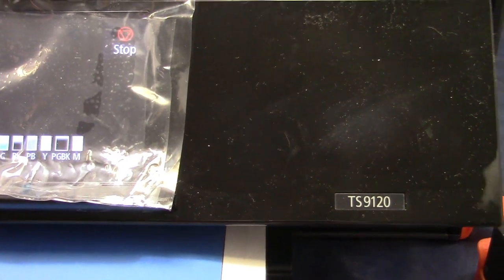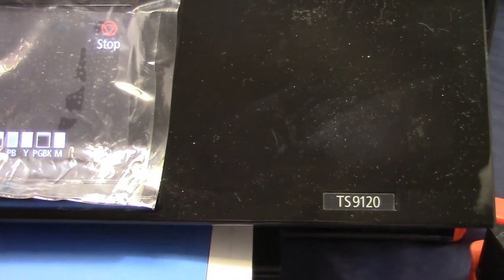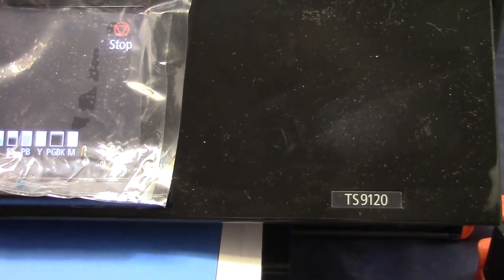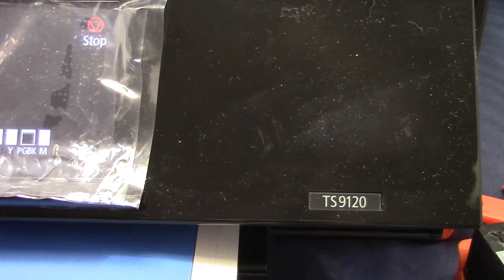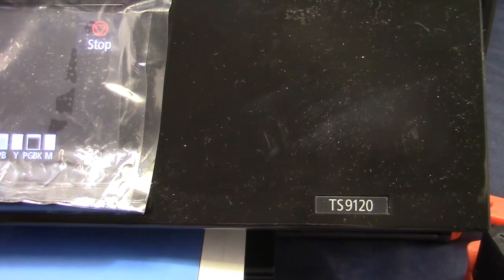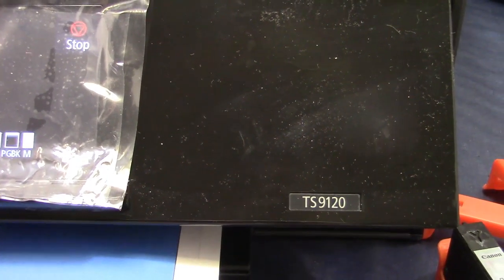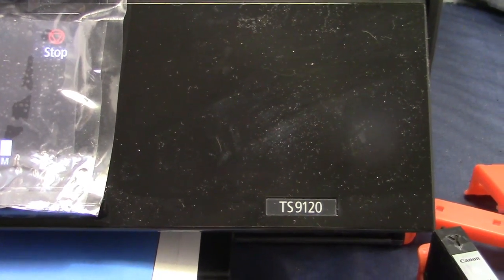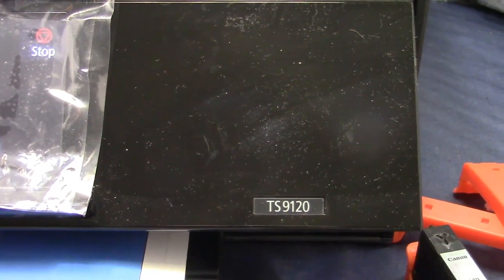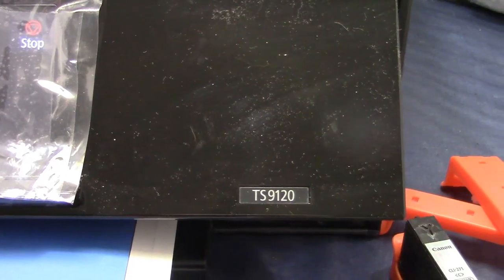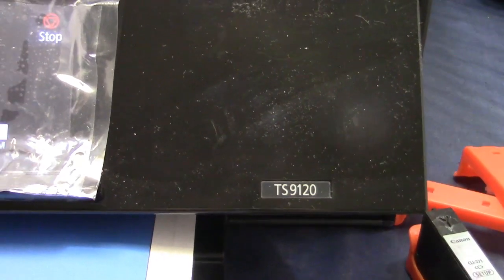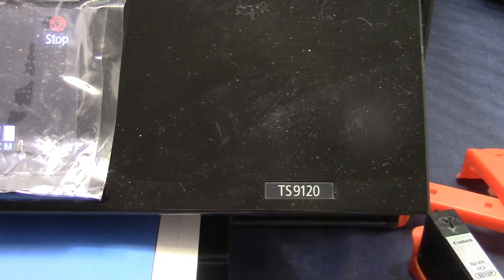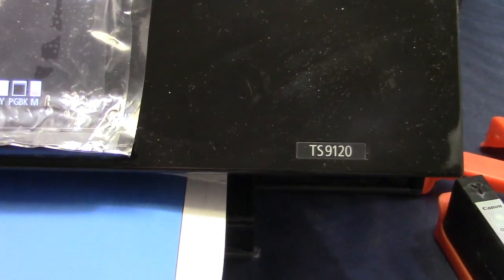Inkproducts.com has released a new economy kit for Canon's newest printers like the TS 9120, 8120, and 6120, as well as the TR 7520 and 8520, which all use the new 280 and 281 cartridges.